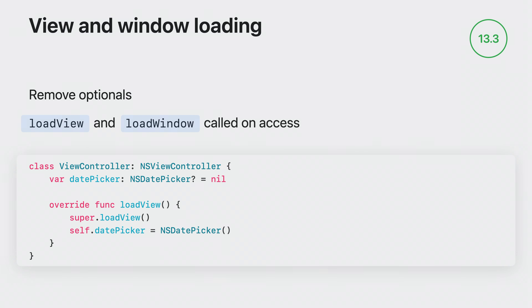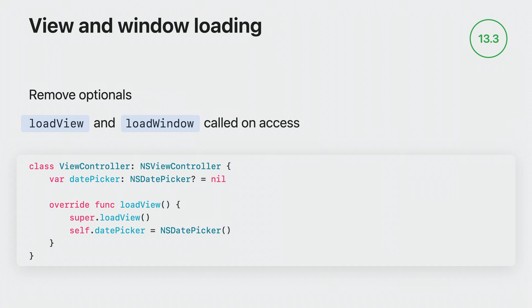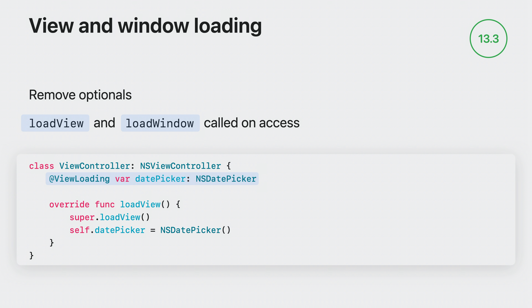In macOS Ventura 13.3, we introduced a new property wrapper for NSViewController: @ViewLoading. Use ViewLoading on properties that are initialized in loadView. If these properties were previously optional, you can remove the optionality and any related checks — the ViewController will make sure the property is initialized by calling loadView if needed. A similar property wrapper, @WindowLoading, is also available for properties on NSWindowController.